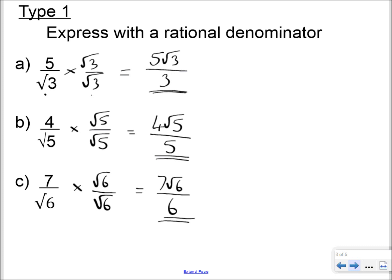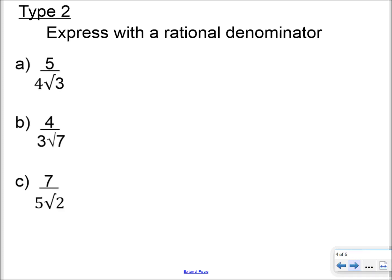Now, as we were saying, sometimes you can get examples which have a denominator which is a bit more complicated. Now, you could multiply everything through by 4 root 3 over 4 root 3, and then you'd have to simplify it, but you're far easier just taking the root part of the denominator and multiplying the whole thing by that root divided by itself.